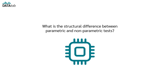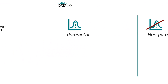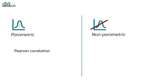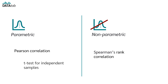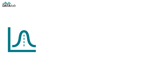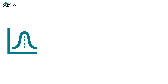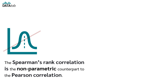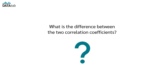What is the structural difference between parametric and nonparametric tests? Let's take a look at Pearson correlation and Spearman's rank correlation, as well as a t-test for independent samples and the Mann-Whitney-U test. The Spearman's rank correlation is the nonparametric counterpart to the Pearson correlation. What is the difference between the two correlation coefficients?